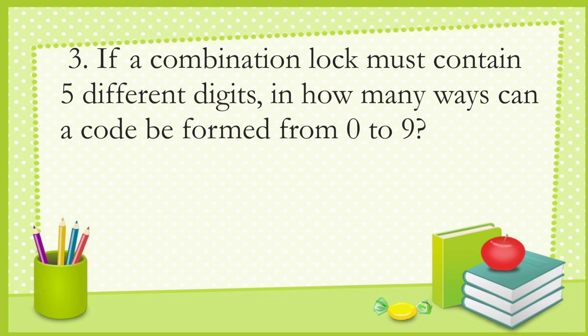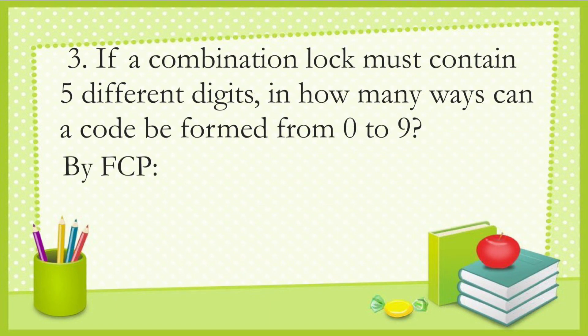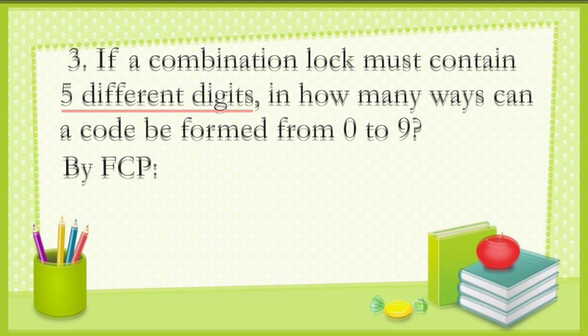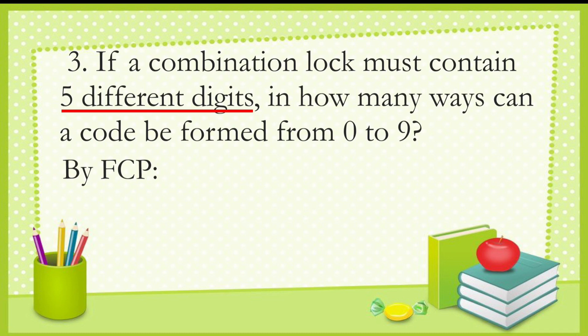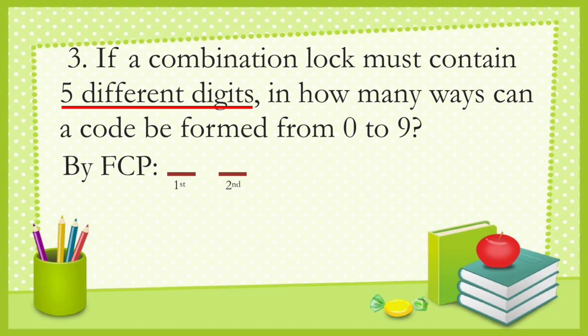Number three: if a combination lock must contain five different digits, in how many ways can a code be formed from 0 to 9? By the fundamental counting principle, we need five different digits with no repetition — hundreds digit, tens digit, and units digit positions apply. For the first digit, we have 10 choices from 0 to 9.